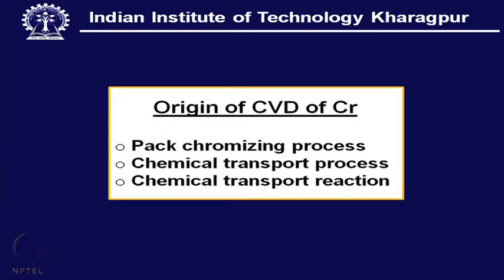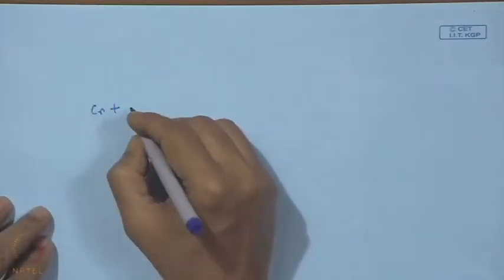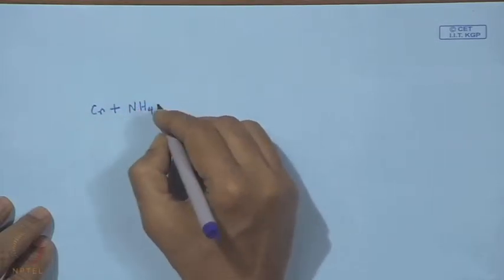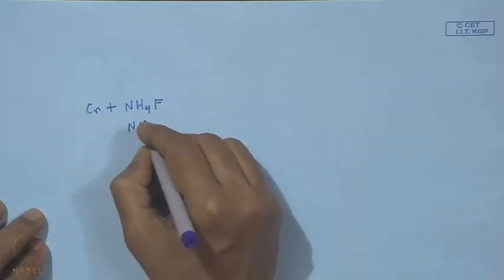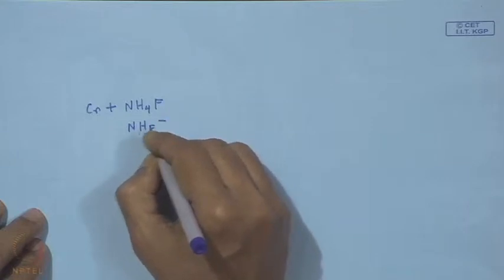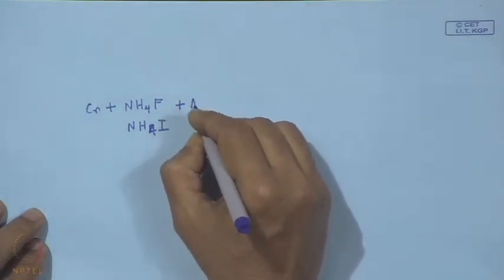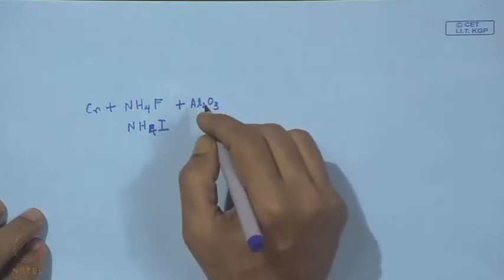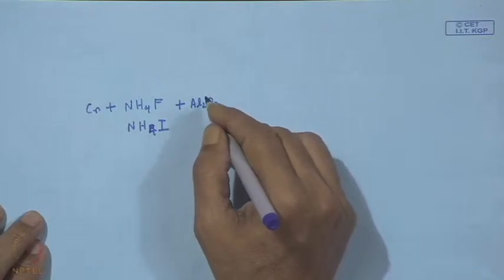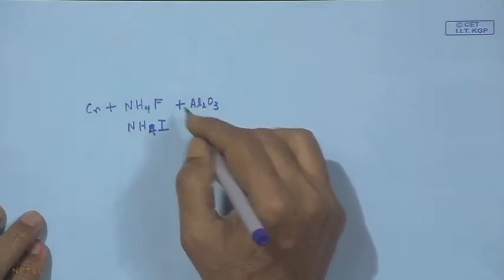CVD of chromium has its origin — in fact, CVD of chromium finds its principle from the chromizing process, or pack chromizing process. In this pack chromizing process, what happens is: chromium powder plus one activator like NH4F or NH4I, which can be used as an activator, plus powder of aluminum oxide which is an inert material — it provides the necessary porosity in that mixture.